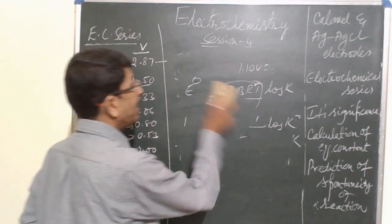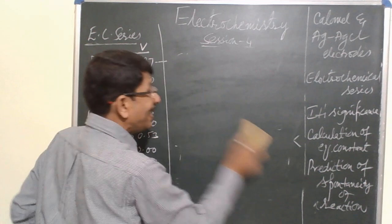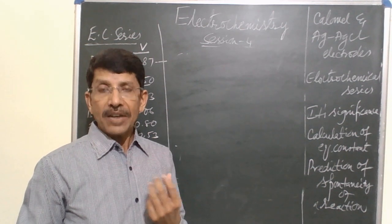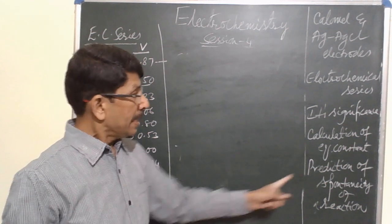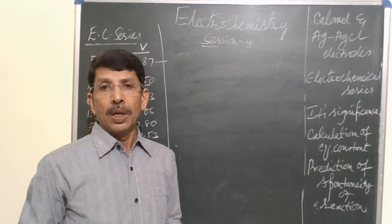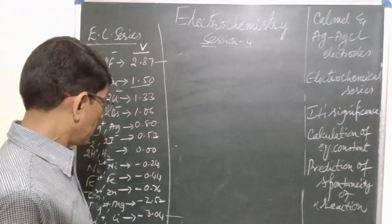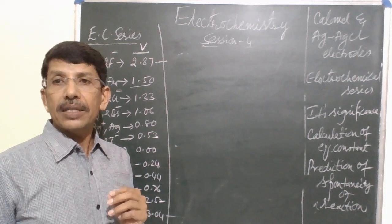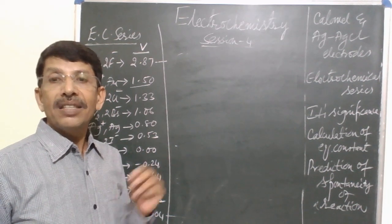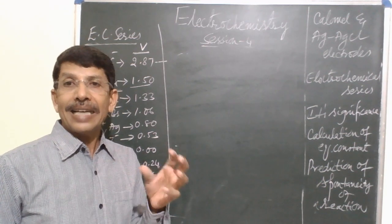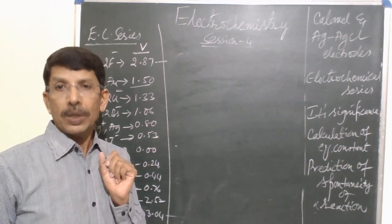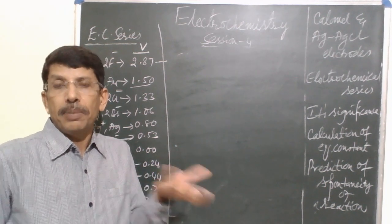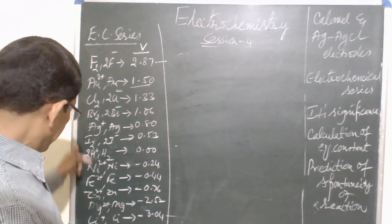So this is how we can calculate the equilibrium constant for any reaction, knowing E° and the number of electrons involved. The second application is prediction of spontaneity of a reaction. With the knowledge of E° values, it is possible to predict whether a redox reaction is spontaneous or non-spontaneous. Spontaneous means the reaction is feasible — it actually occurs.